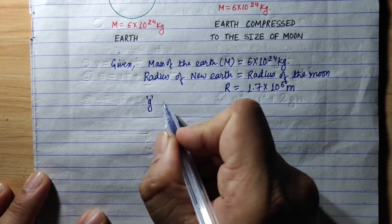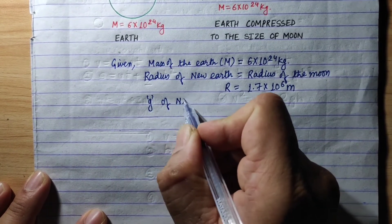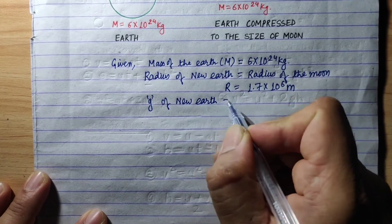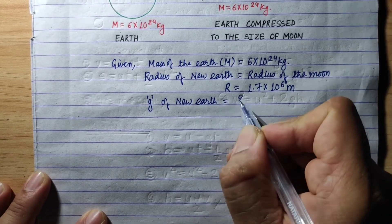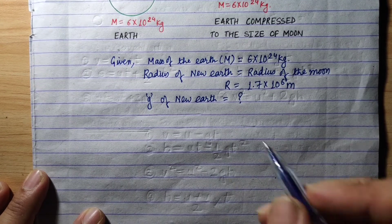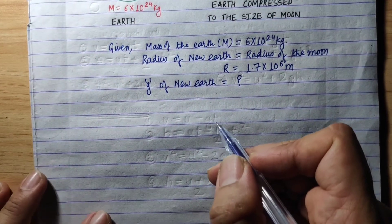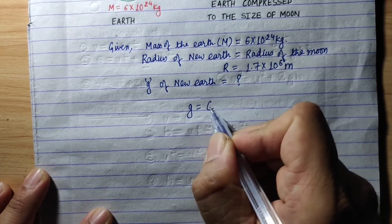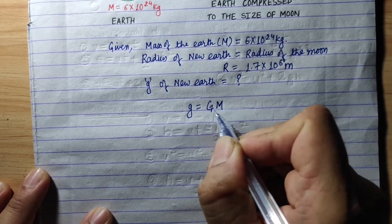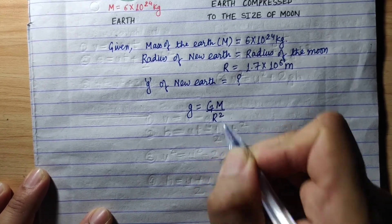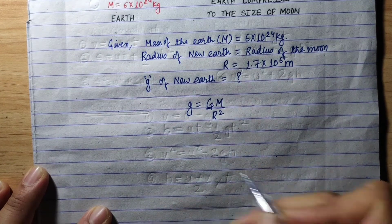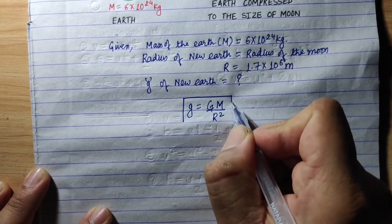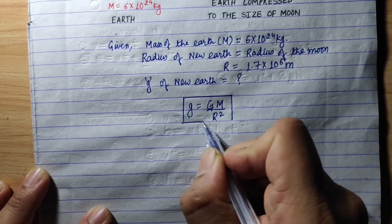We need to find the acceleration due to gravity of the new Earth. We have to apply the formula: small g equals capital G times capital M divided by R squared.